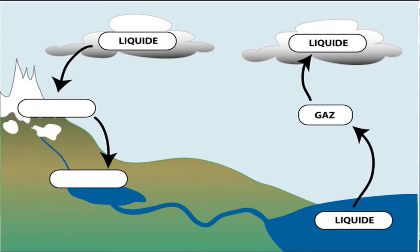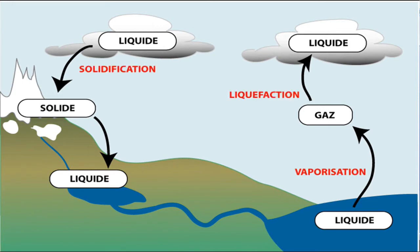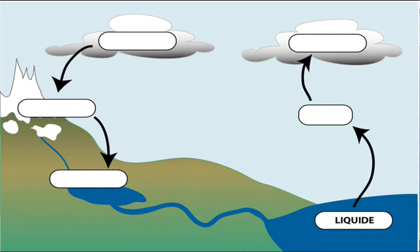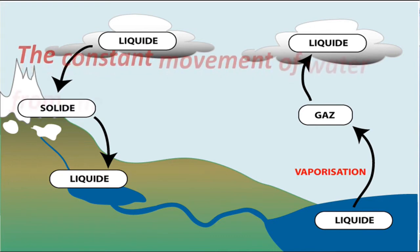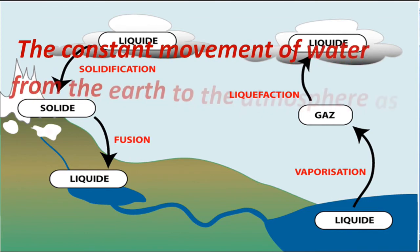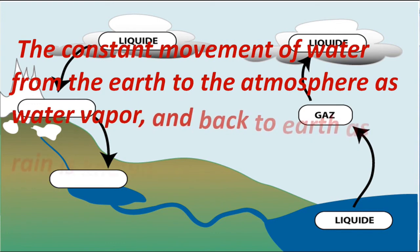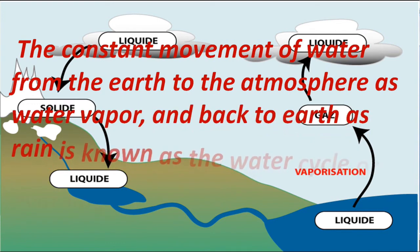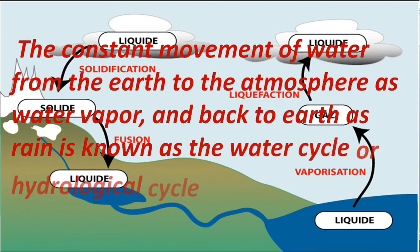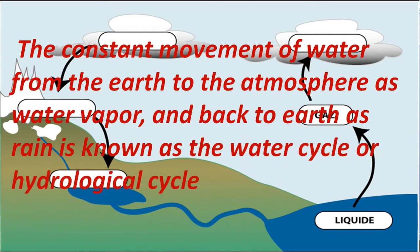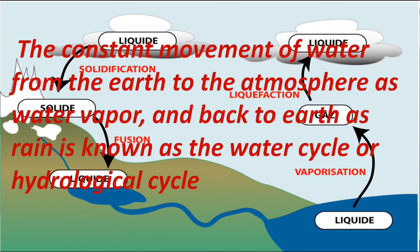In this way, the processes are: liquid to vaporization, then vapor or gas, then condensation, then liquid, and then the liquid gets precipitated in the form of solid. Therefore, we define the constant movement of water from the earth to the atmosphere as water vapours and back to the earth as rain — this is known as the water cycle or hydrological cycle.